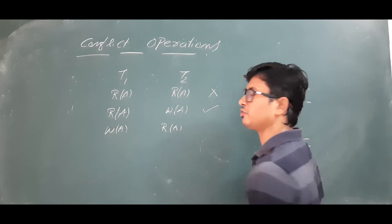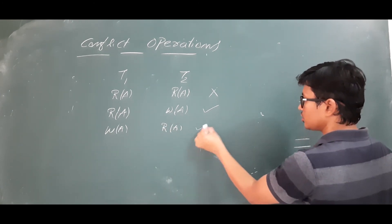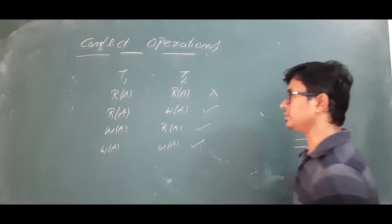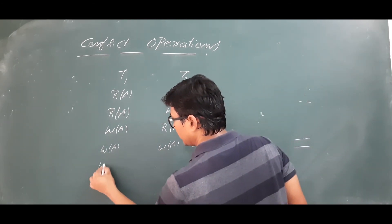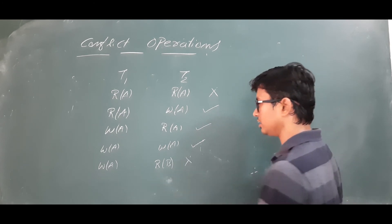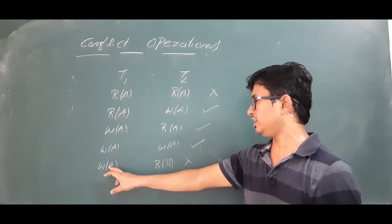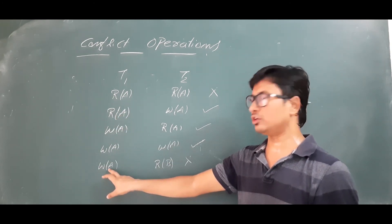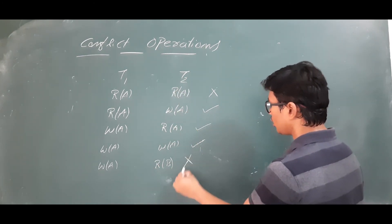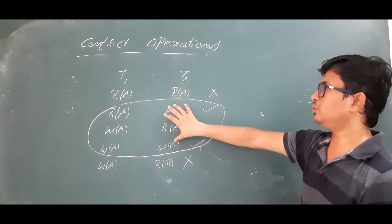Write(A) followed by Read(A) is also a conflict operation. Write(A) followed by Write(A) is also a conflict operation. However, if T1 performs Write(A) and T2 performs Read(B), that is not a conflict operation. For an operation to be a conflict, it must be performed on the same data item. Here T1 operates on data item A and T2 operates on data item B — they are different data items, so it is not a conflict. We have three conflict operations to be concerned about.